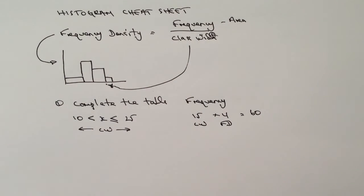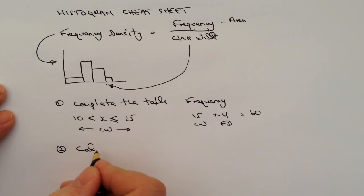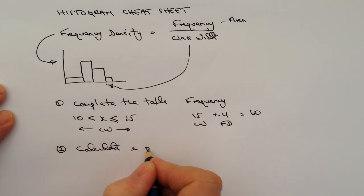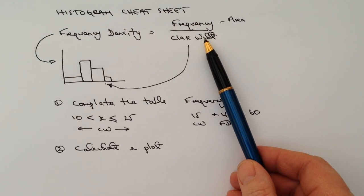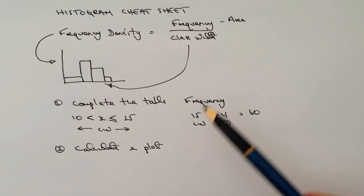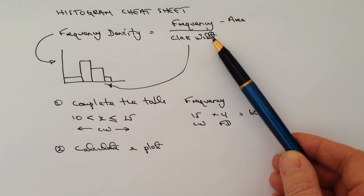Those are typically the questions you get as one option within histogram GCSE questions. The second type will ask you to calculate the frequency densities and plot a graph. That should be fairly straightforward because usually it gives you the frequency and the class width, and you simply divide the frequency by the class width.